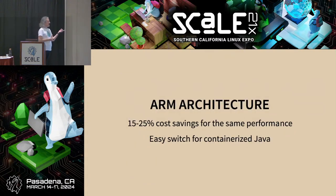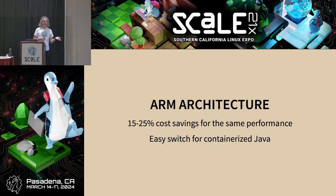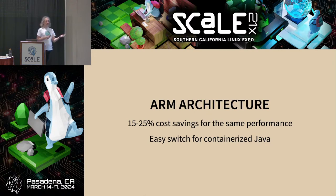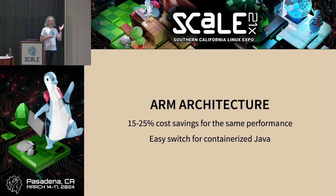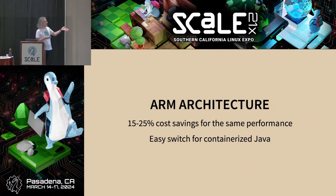We use a different node pool with ARM CPUs. We estimate 15 to 25% savings for the same performance. For Java it's very easy to switch — just change the base container to a JDK built for ARM. Nothing else to do. Besides saving money, you're also using less energy, so it's a win-win.